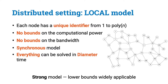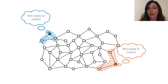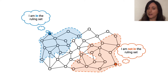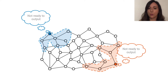This is quite a strong model, hence lower bounds for this model are widely applicable. Since there is no bound on the size of the messages, at each round each node can share with its neighbors all the information it knows. Hence, one can see a T-round algorithm in the LOCAL model as a mapping from T-hop neighborhoods to outputs. In other words, we are interested in studying the locality of a problem.